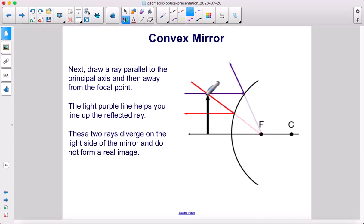from the top of the object, you go parallel to the principal axis. Once it hits the mirror, it's going to go through the focal point. Remember, this is not a real ray.